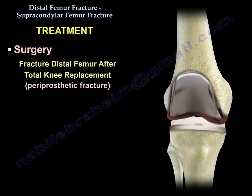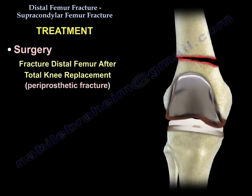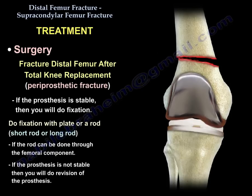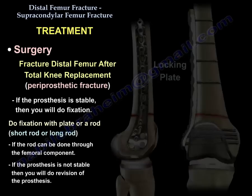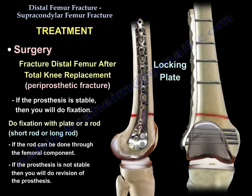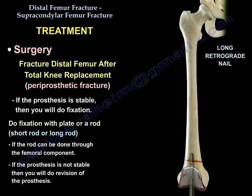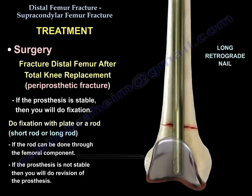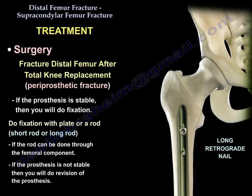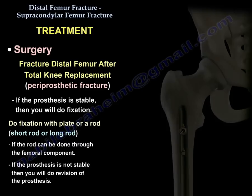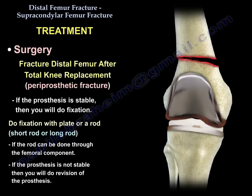Fracture of the distal femur after total knee replacement is called a periprosthetic fracture. If the prosthesis is stable, then you will do fixation — with a plate or a rod if the rod can be inserted through the femoral component. If the prosthesis is not stable, then you will do revision of the prosthesis.